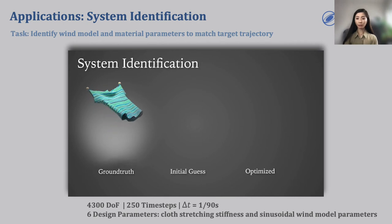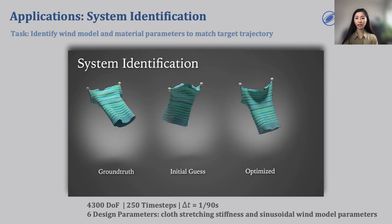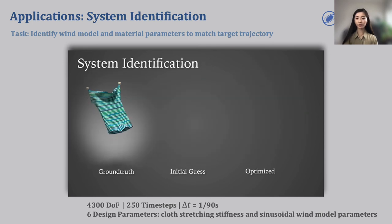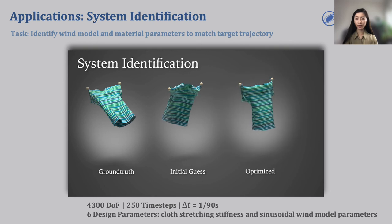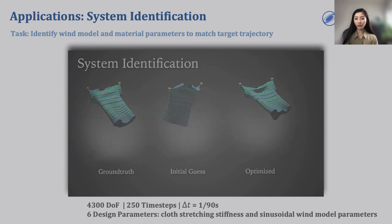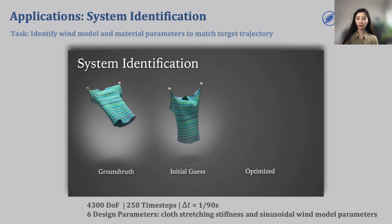Many cloth-related applications can benefit from a differentiable simulator. In this system identification task, a target motion trajectory of a hanging t-shirt blown by the wind is given, and DIFFCLOTH is used to identify the system parameters to reconstruct the motion. Specifically, the design parameters are the cloth stretching stiffness and the parameters of the wind model, which we parameterize as a sinusoidal function. After a few iterations of optimization, the motion trajectory is successfully reconstructed.